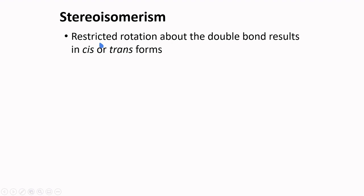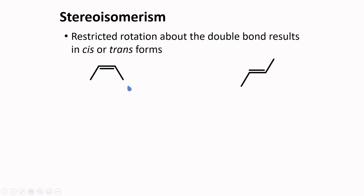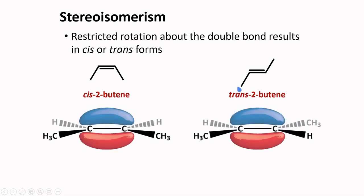There is restricted rotation about double bonds, and this results in the formation of cis and trans forms. These compounds are both 2-butene, but the larger groups in one compound are positioned on the same side, whereas in the other they are on opposite sides. This compound is called cis-2-butene, while the other is called trans-2-butene. As shown in these illustrations, the pi bonds prevent rotation, and thus we have stereoisomers.